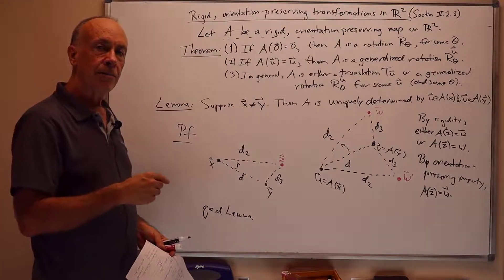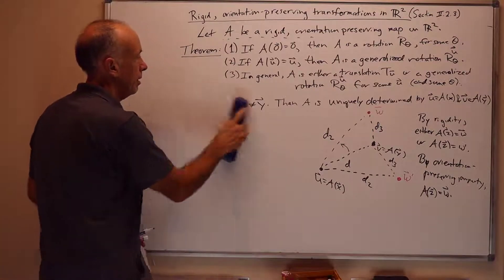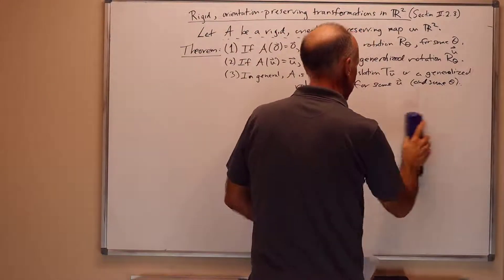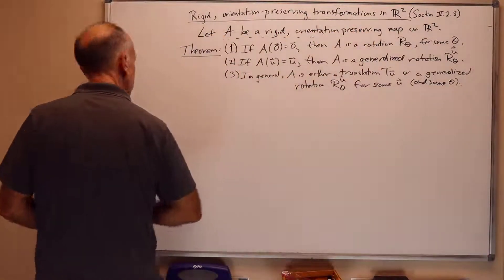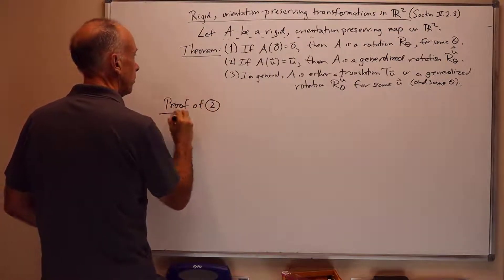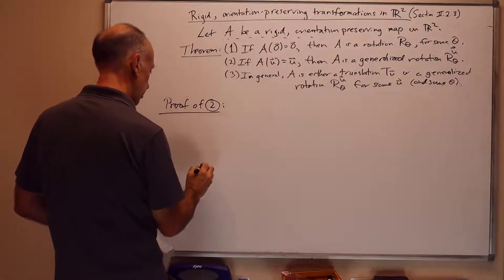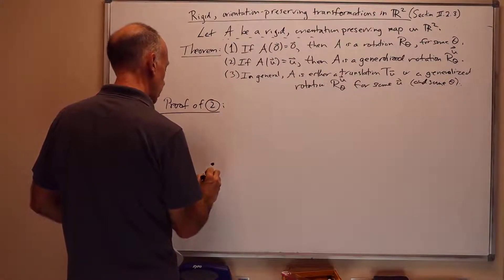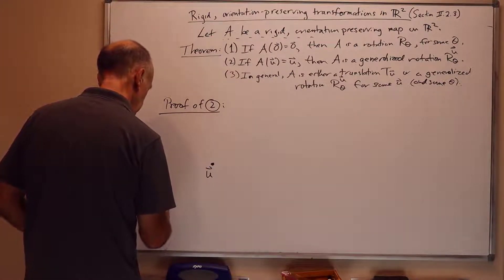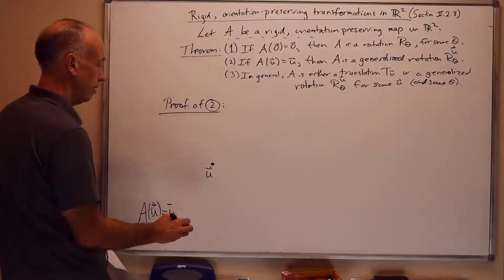Now we're going to use the lemma to prove parts 1 and 2 of the theorem. Part 2 is just a generalization of part 1, because you can just take u equal to v. So let's just prove part 2. The picture is: there's some point u, and A of u equals u. Let's look at the point 1 unit over — u plus i. This is distance 1, and it lies on the unit circle centered at u.